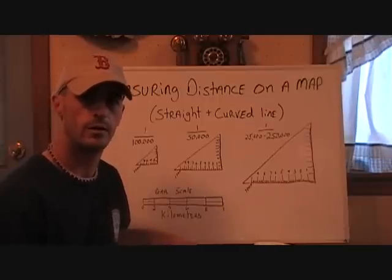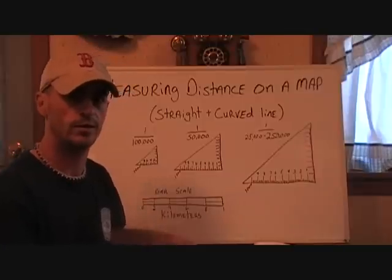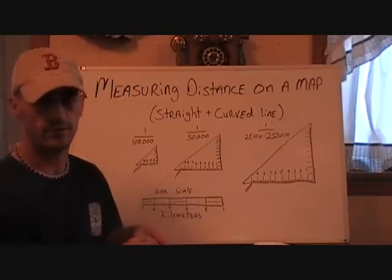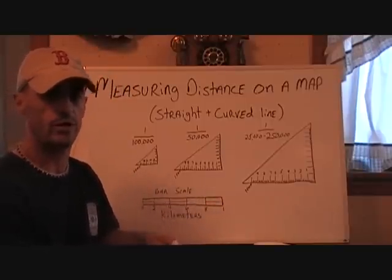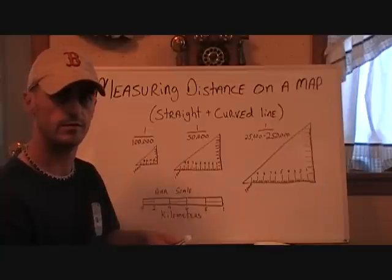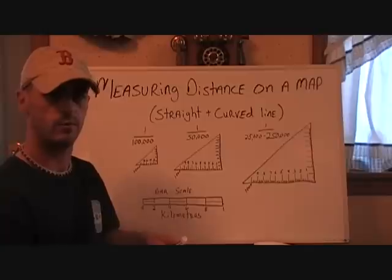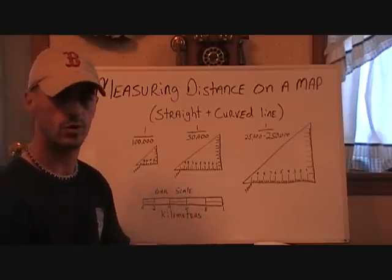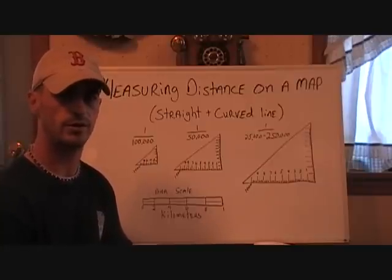Alright guys, we're back for the next video in the Land Nav series. What we're going to talk about next is measuring distance on the map — straight and curve line distance. Straight deals with when you plot your grids and you're going from one spot to another, measuring out that distance where you can use your pace count to get there. Curve line distance deals more with roads and stuff like that, and I'm going to show you a little trick of the trade on how to measure that out.